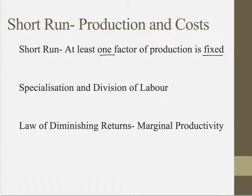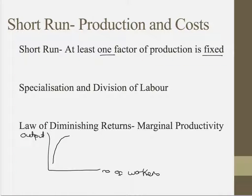Looking at the diagram, as you increase your marginal productivity your output increases as the number of workers increases, and it also increases by a more than proportionate amount. So your workers are specialising and marginal productivity has increased per worker. However, you will reach a point where, because you're throwing variable factors at fixed factors, your marginal returns will begin to fall.